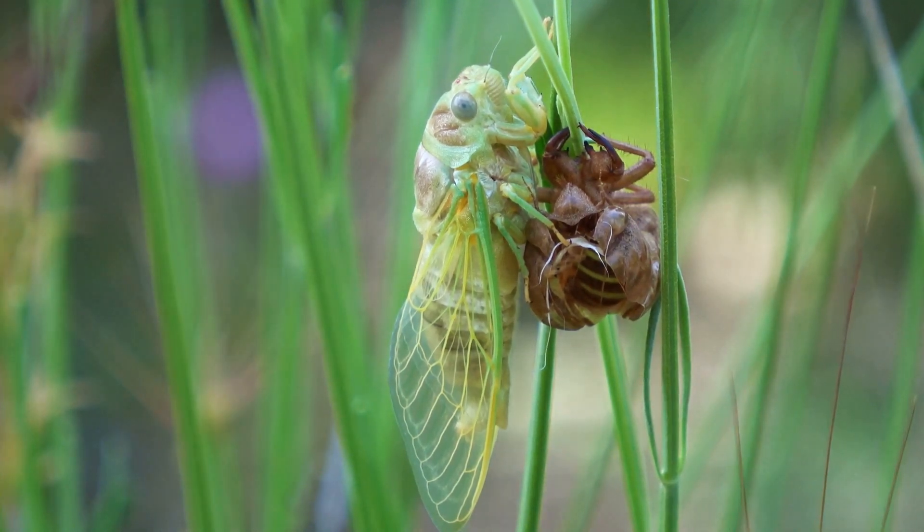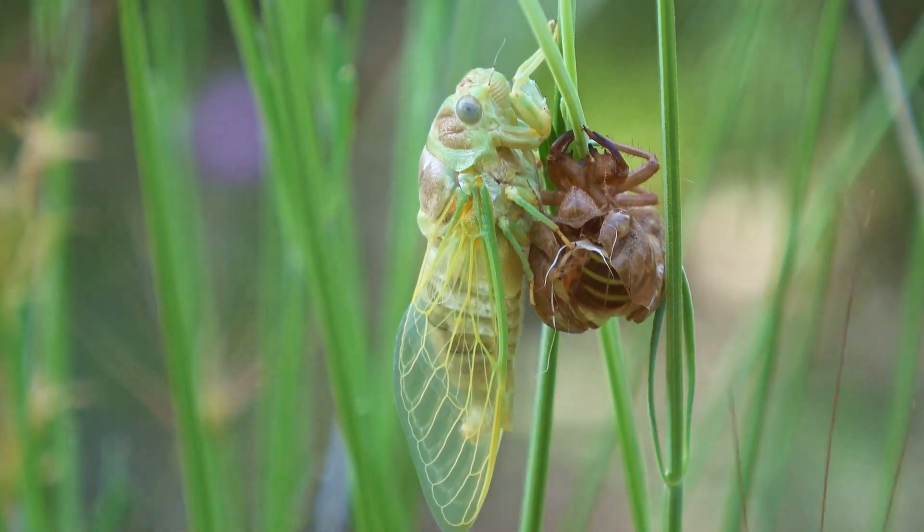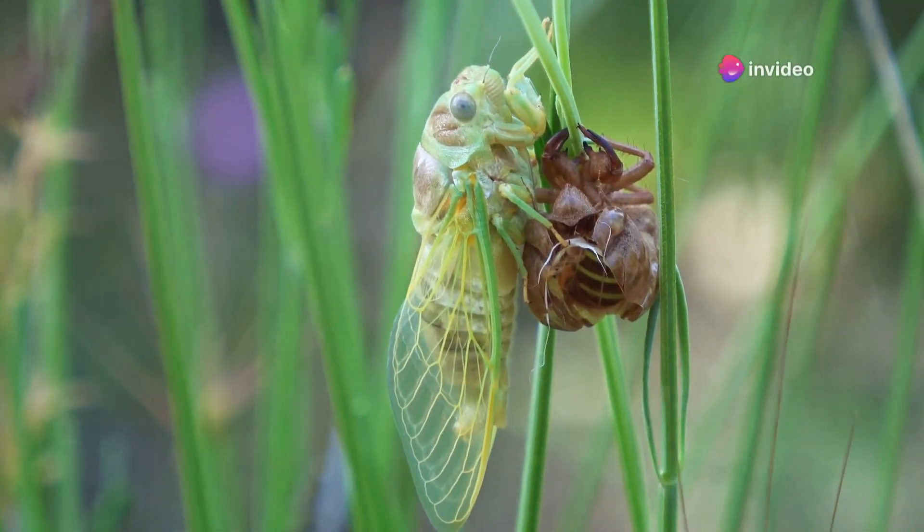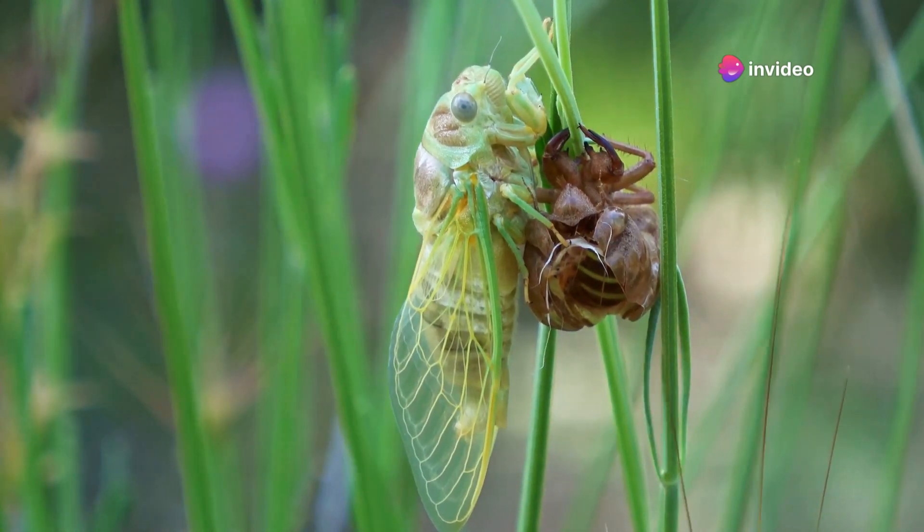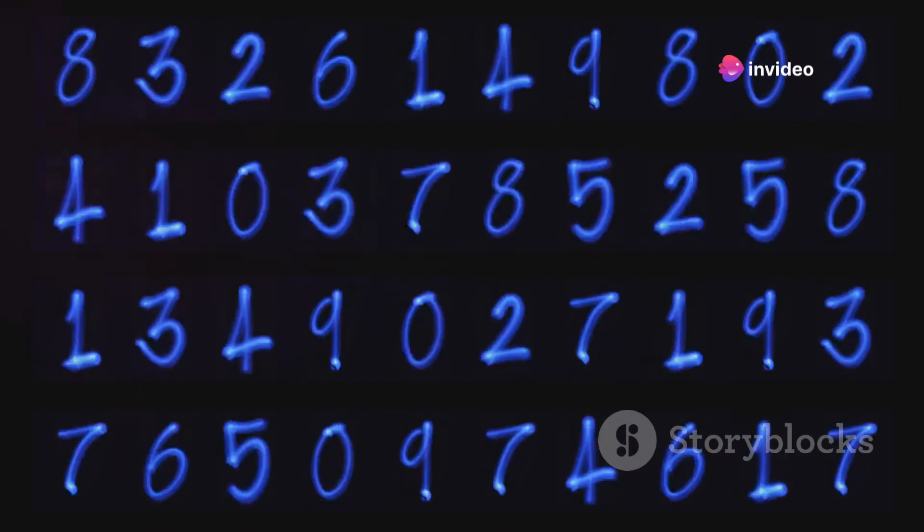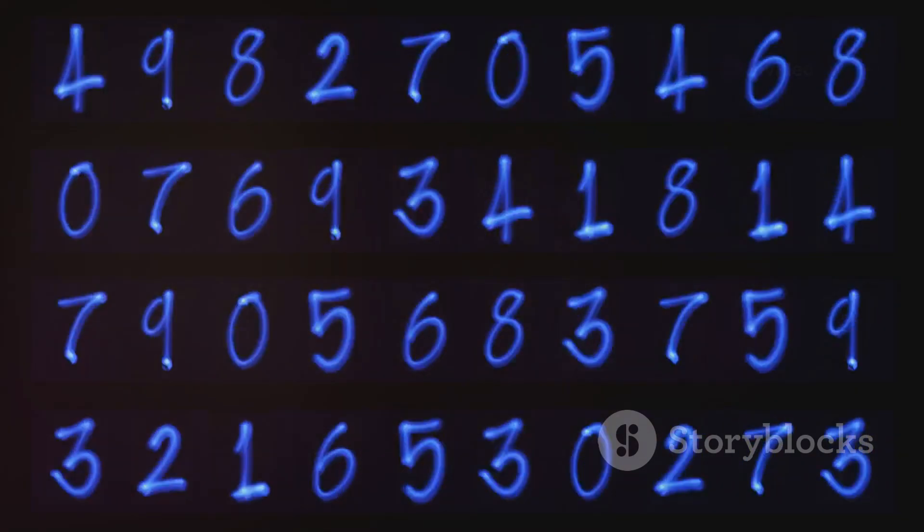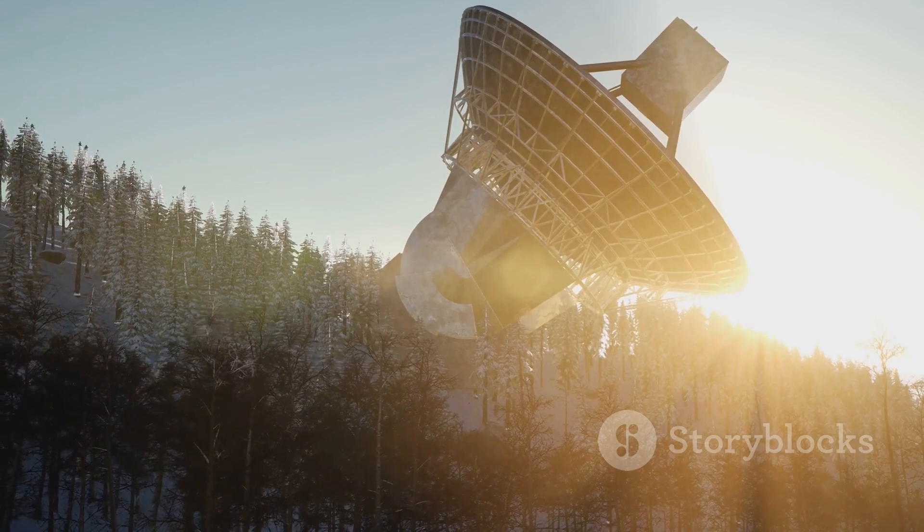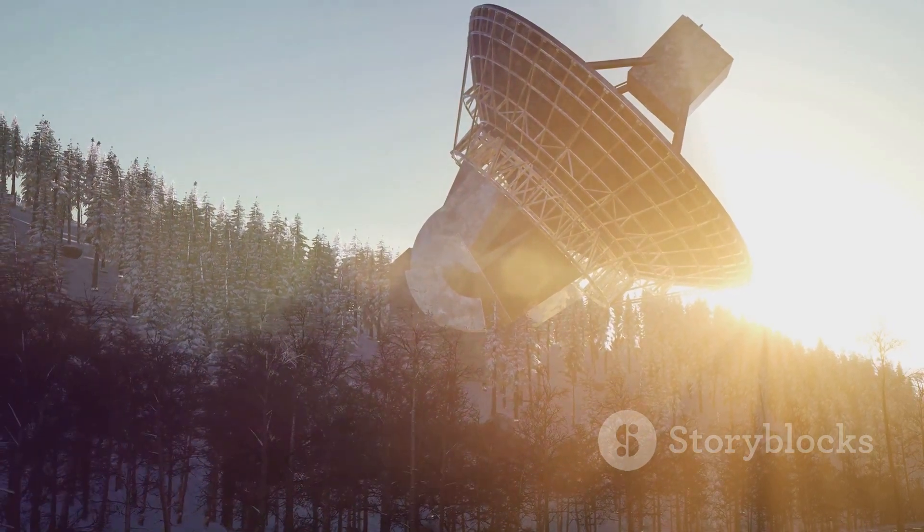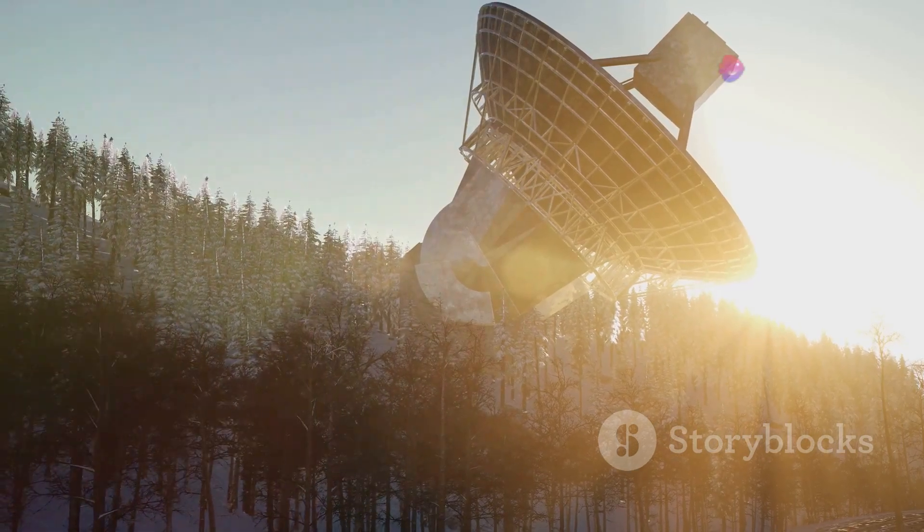Furthermore, certain species of cicadas, fascinating insects known for their synchronized life cycles, emerge from their underground dwellings every 13 or 17 years. Interestingly, both 13 and 17 are prime numbers, just like 37. These examples suggest a subtle connection between prime numbers and the natural world, inviting further exploration.